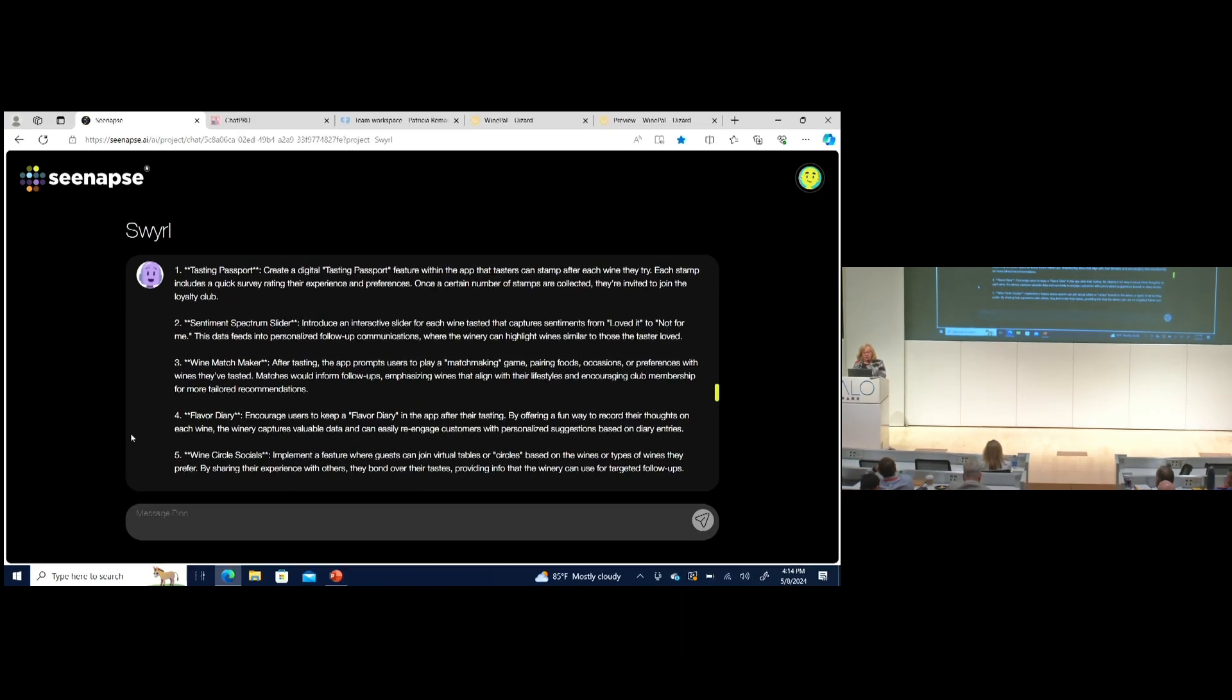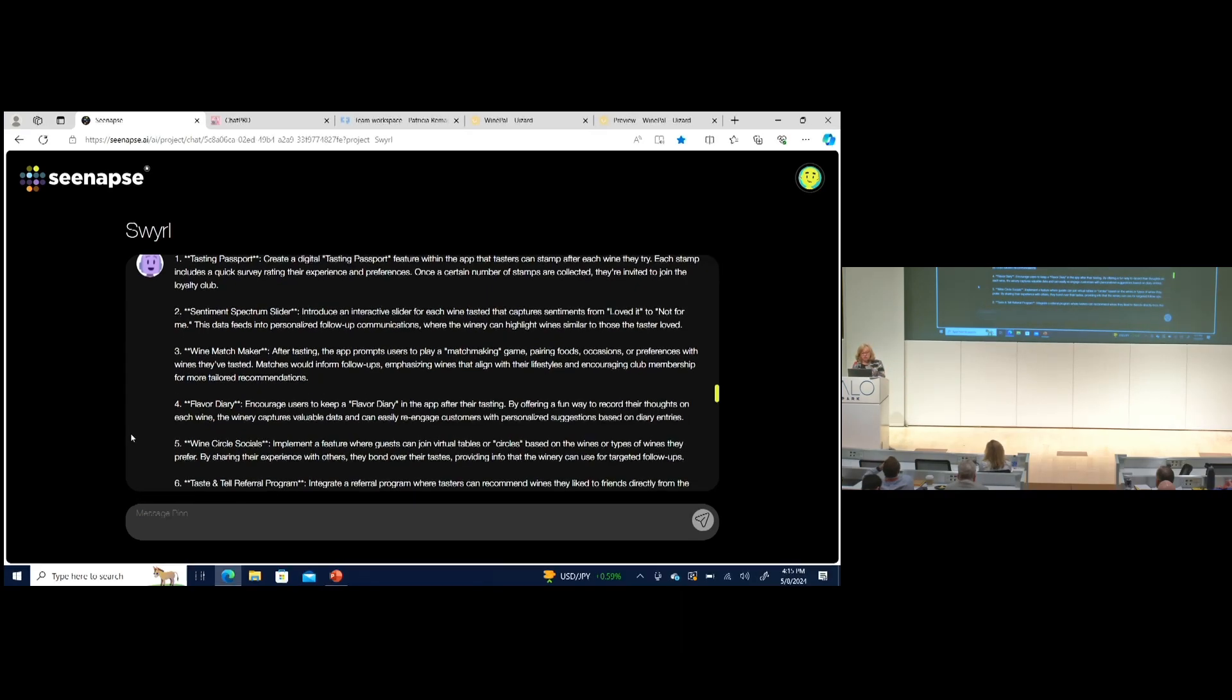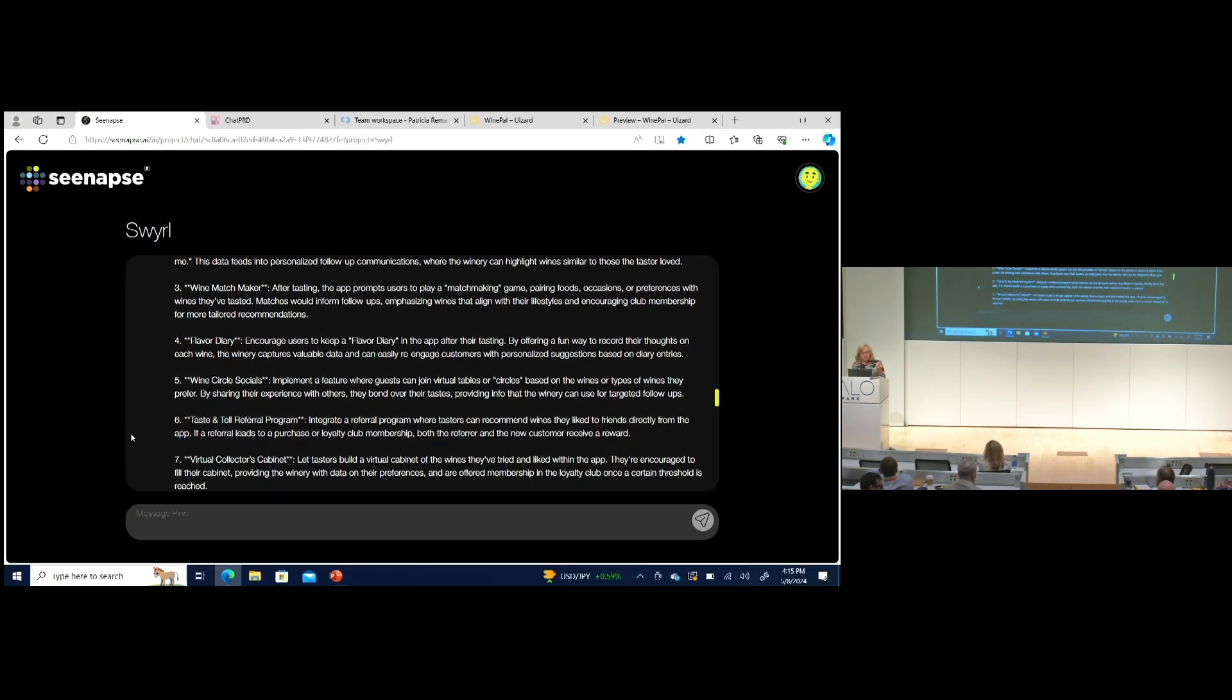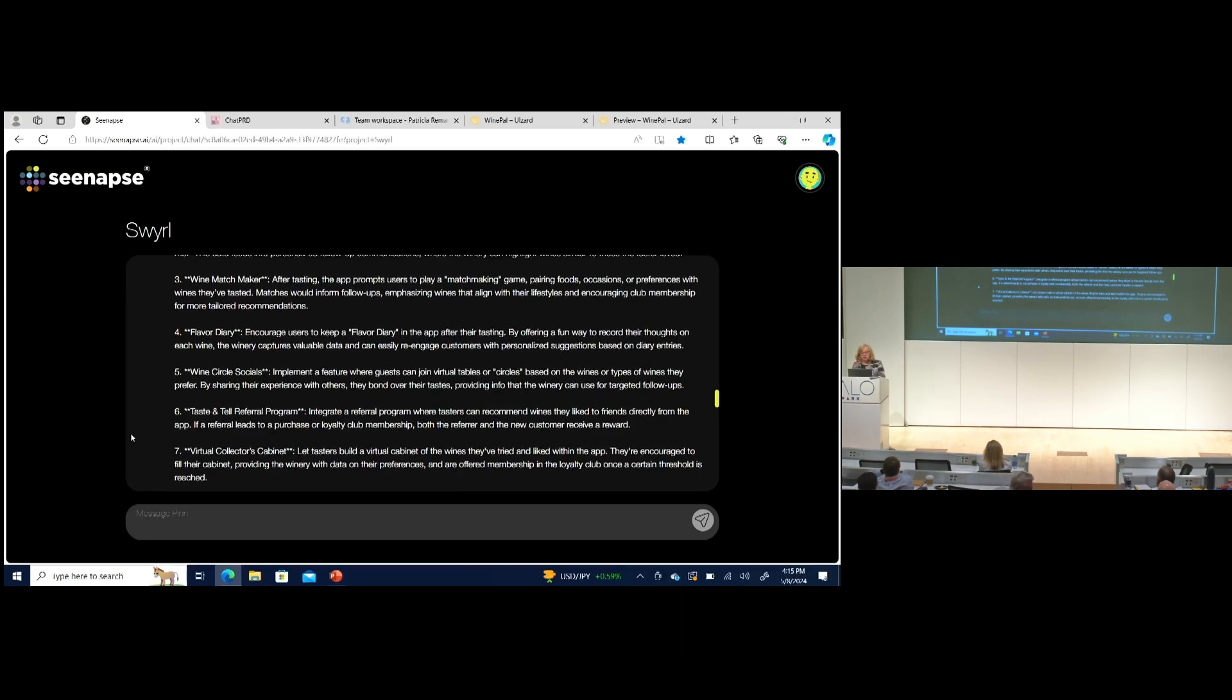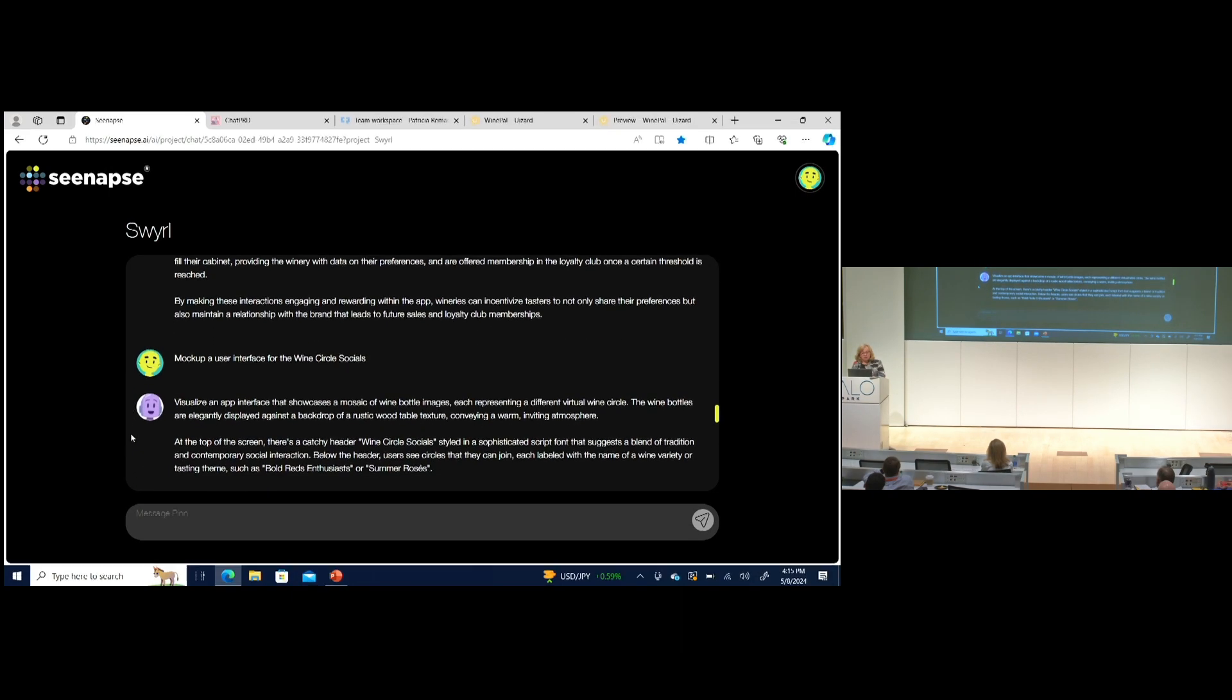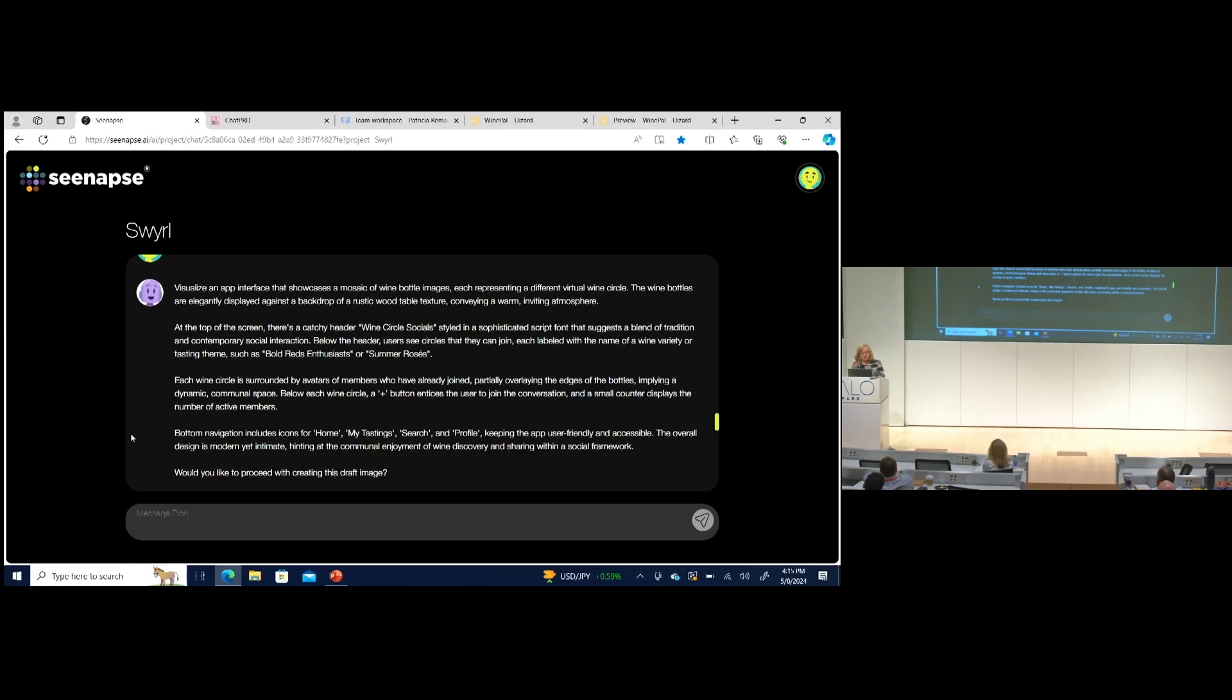It went through and basically started generating ideas that you could use to address this. The one I liked, I focused in on wine circle socials. It said implement a feature where guests can virtually join tables or circles based on the wines they prefer. By sharing their experience with others, they bond over their tastes. I said mock up a user interface of this.